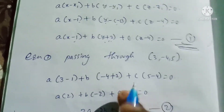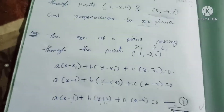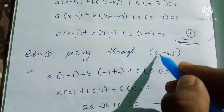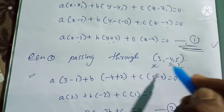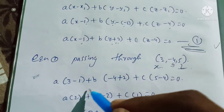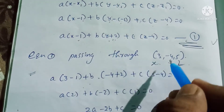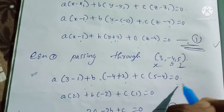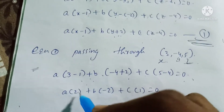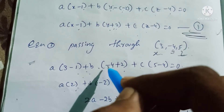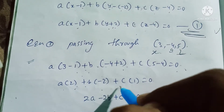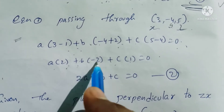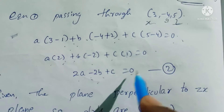Equation 1 passing through the second point (3, -4, 5): a(3 - 1) + b(-4 + 2) + c(5 - 4) = 0, which gives 2a - 2b + c = 0. This is equation 2.